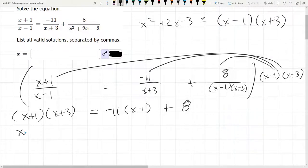Multiply. Foil these right here. x times x is x squared plus x plus 3x is plus 4x. 1 times 3 is positive 3. Distribute negative 11 into x. Negative 11x plus 11 plus 8.